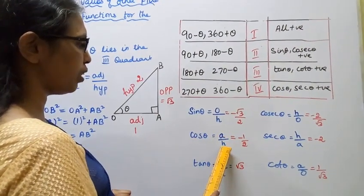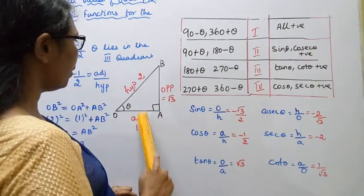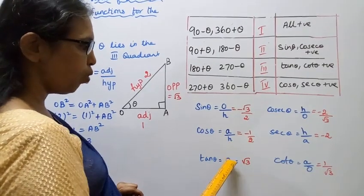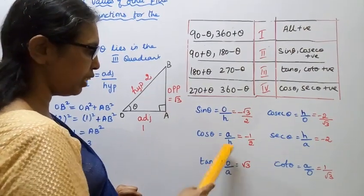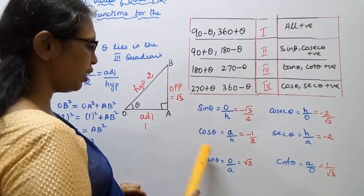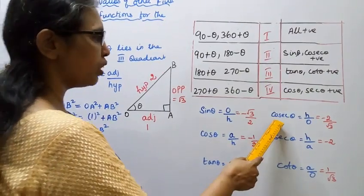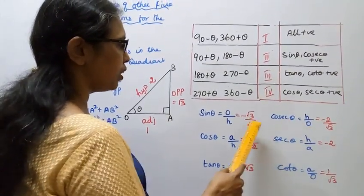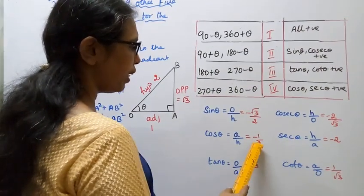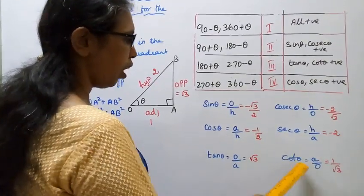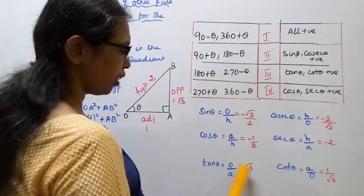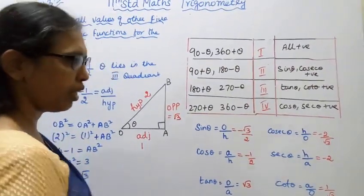The adjacent is 1, so tan theta equals opposite by adjacent equals root 3 by 1 equals root 3. Cosecant theta equals hypotenuse by opposite equals minus 2 by root 3. Secant theta equals minus 2 by 1 equals minus 2. Cot theta equals 1 by root 3. Tan and cot are positive in the third quadrant.